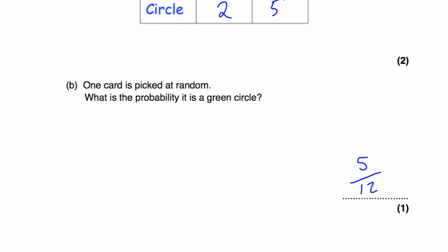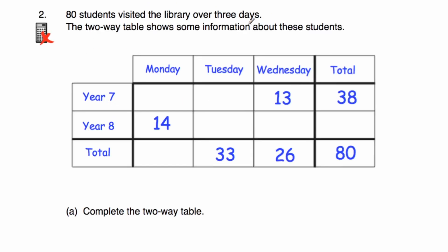Let's have a look at question number two. Question two says: 80 students visit the library over three days. The two-way table below shows some information about these students. We've got Monday, Tuesday, Wednesday as the three days, and the total. There are 38 year seven students altogether. Part A says to complete the two-way table. I'm going to start by finding the number of year eight students: 80 subtract 38 equals 42. So there are 42 year eight students.